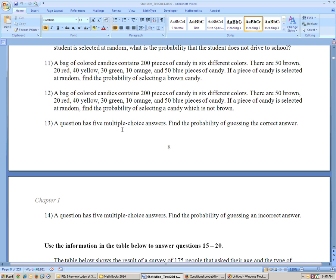13, a question has five multiple choice answers, so there's a choice like A, B, C, D, or E. The probability that you guessed it correct, since there's five choices, is 1 out of 5.